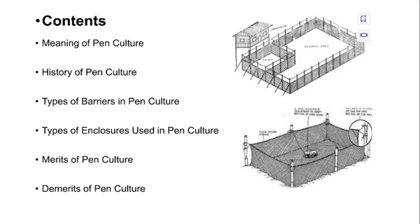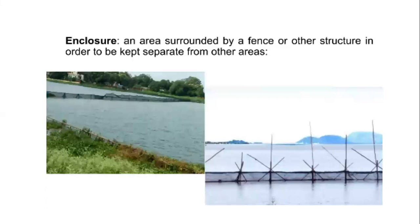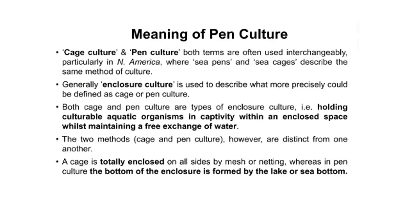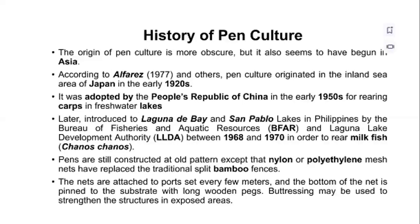First, what is an enclosure? An enclosure is an area which is separated from the rest of the area by building a fence, as you can see in the diagram. In North America, cage culture and pen culture are considered the same. They are quite similar with a little difference: the cage is totally enclosed on all sides by mesh and netting, while in pen culture the bottom of the pen is enclosed by the river or sea bottom. Both methods are used for culturing different aquatic organisms like fish, shrimp, or prawn.